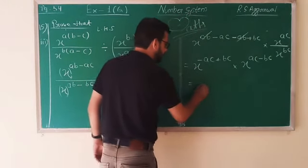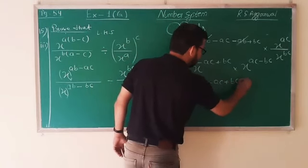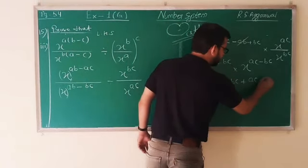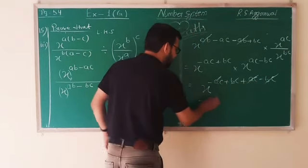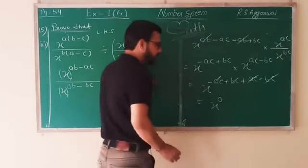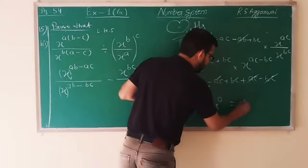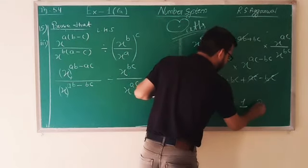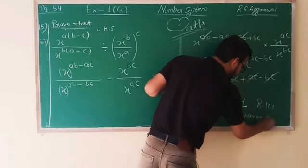So base same, divide case, so power is minus. So now x to the power ab minus ac minus ab plus bc. In multiply, this will interchange: x to the power ac upon x to the power bc. Now something cancels - ab cancels. So this value is x to the power minus ac plus bc multiplied. Same base, divide case, so power is ac minus bc. In multiply, powers add: minus ac plus bc plus ac minus bc. BC cancels, AC cancels. The value that comes is 0.